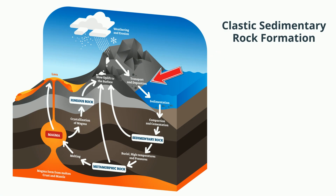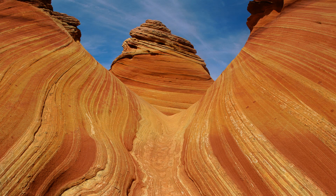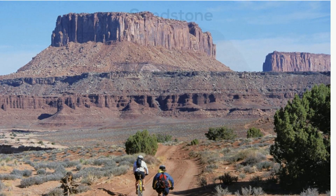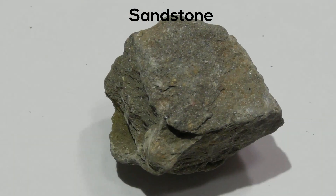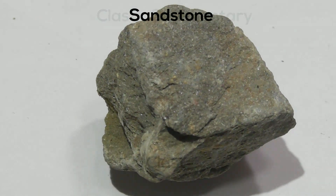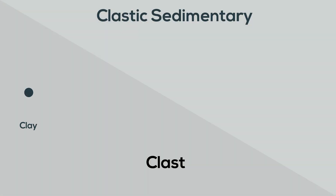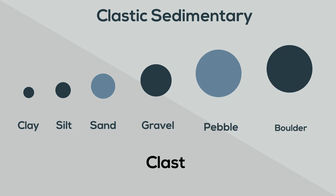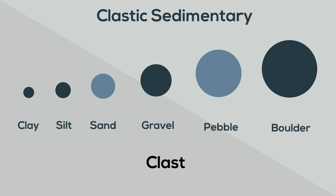Clastic sedimentary rocks are the group of rocks most people think of when they hear the term sedimentary rocks. Clastic sedimentary rocks are made up of pieces of pre-existing rocks called clasts that vary in size.